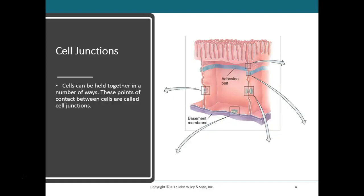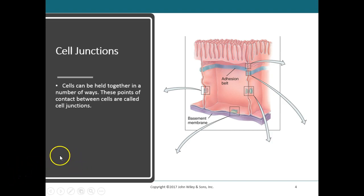Cell junctions are points of contact between the membranes of cells that are close together and make up tissue. Depending on their structure, cell junctions typically function in one of three ways: some form very tight, fluid-resistant seals between cells; others anchor cells together or anchor cells to surrounding material; and others act as channels which allow ions and molecules to pass back and forth from cell to cell within a tissue.